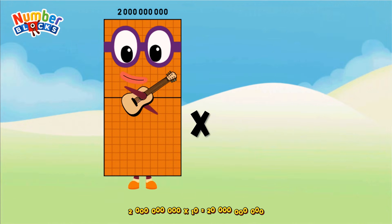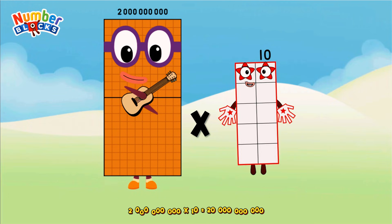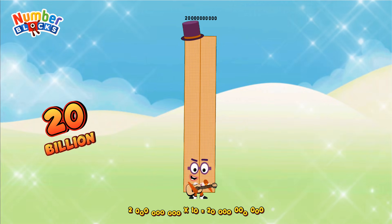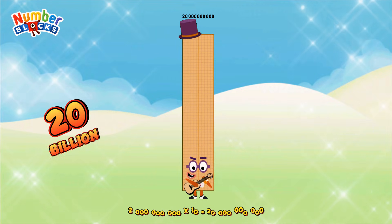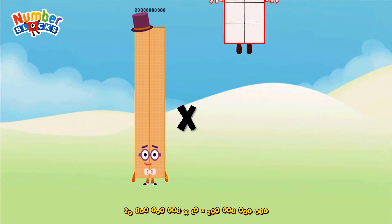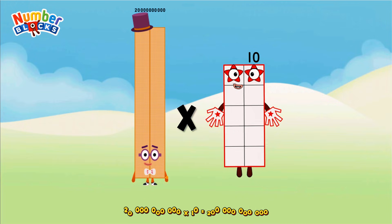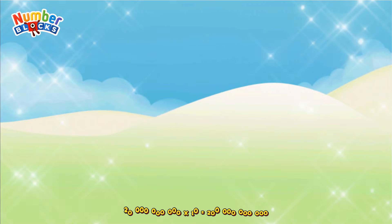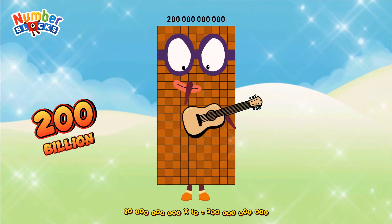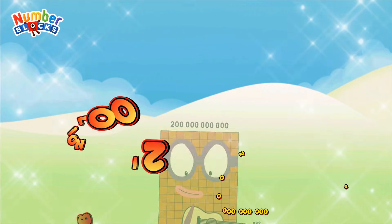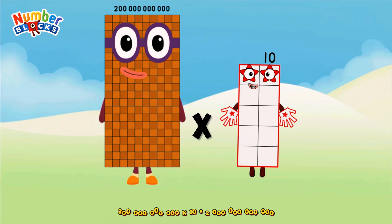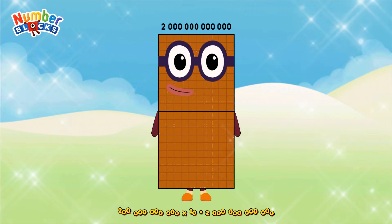2,000,000,000 times 10 equals 20,000,000,000. 20,000,000,000 times 10 equals 200,000,000,000. Equals two trillion.